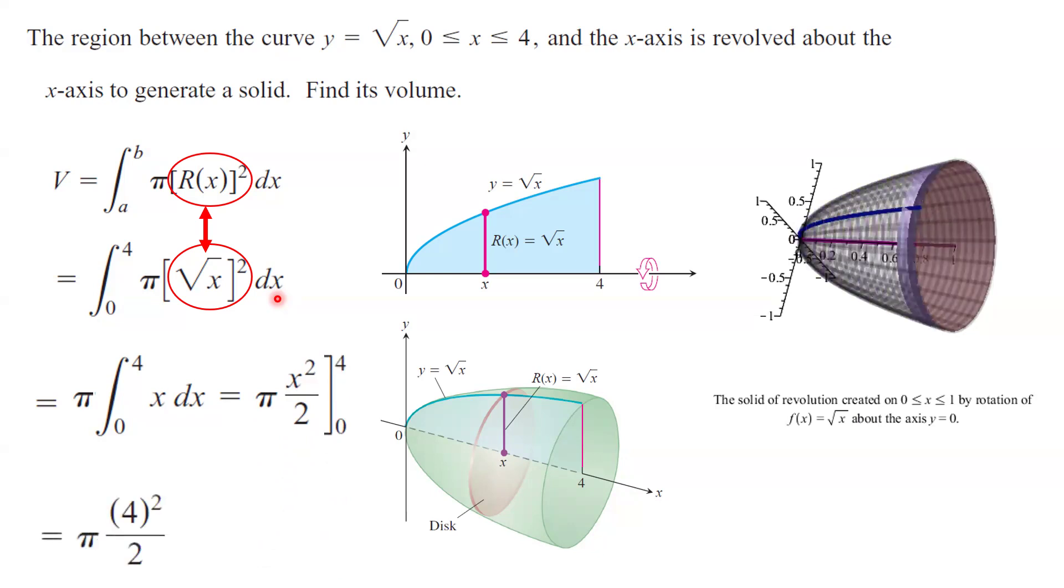Which is π, 4² divided by 2, or 8π. So, this is the volume of the solid bounded by the function y equals square root of x, x bounded between 0 and 4.